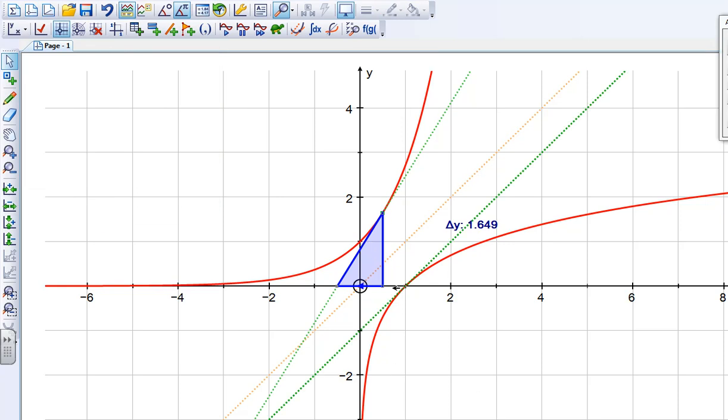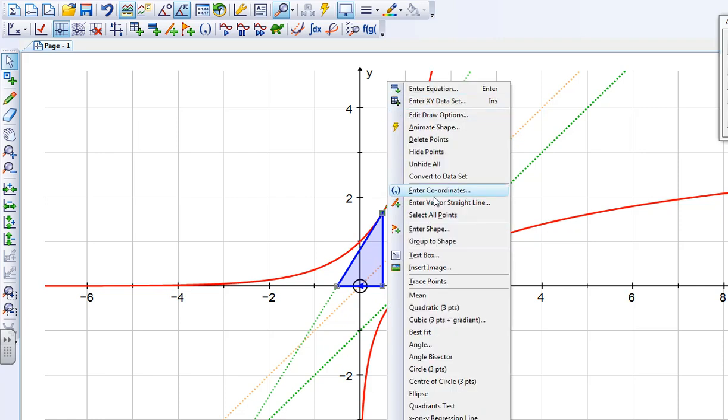Now as I said, I want to reflect this triangle here, so I'm going to make it into a shape, or group into shape. So if I select the three corners, right click, and then choose my group to shape, which is here.